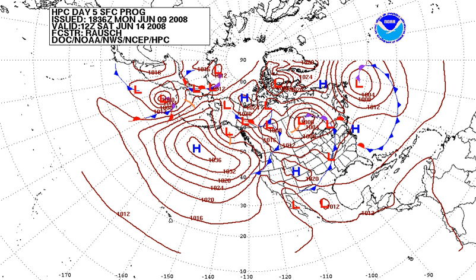Pressure P, mass M, and the acceleration due to gravity g are related by P = F/A = M·g/A, where A is surface area. Atmospheric pressure is thus proportional to the weight per unit area of the atmospheric mass above that location.